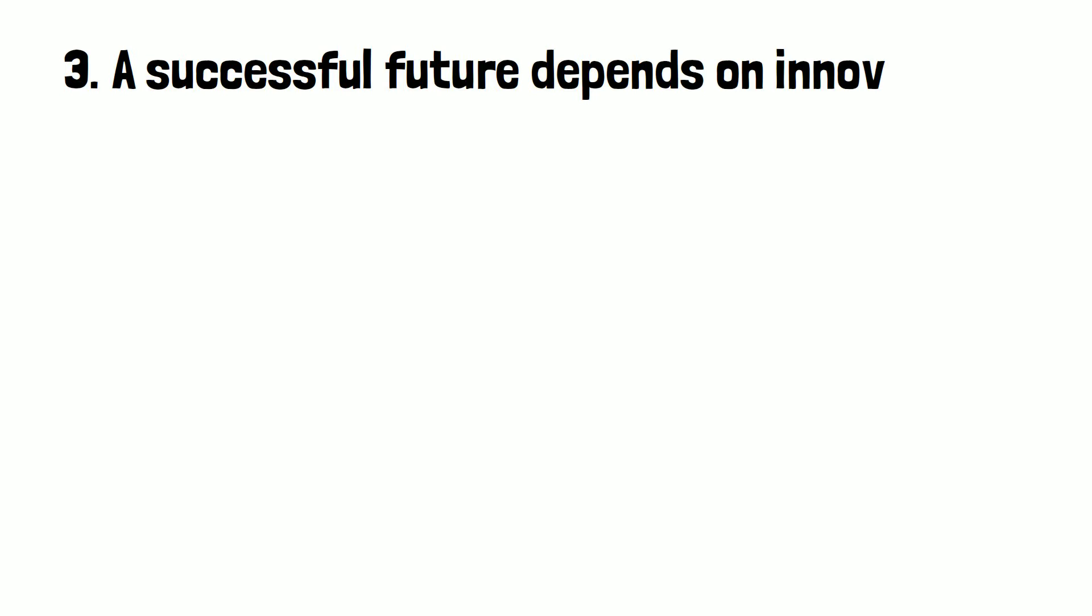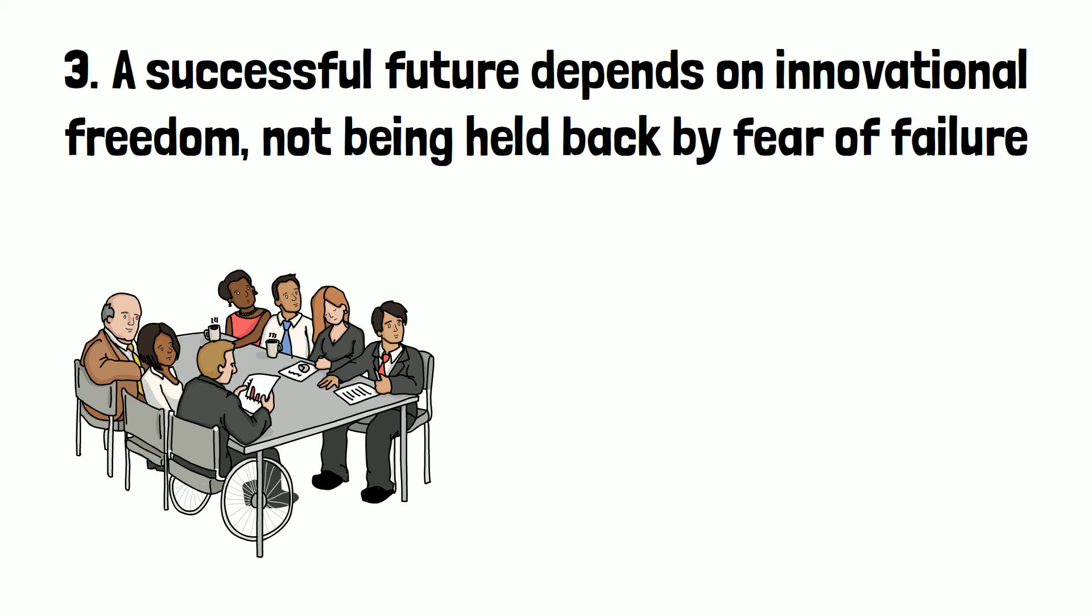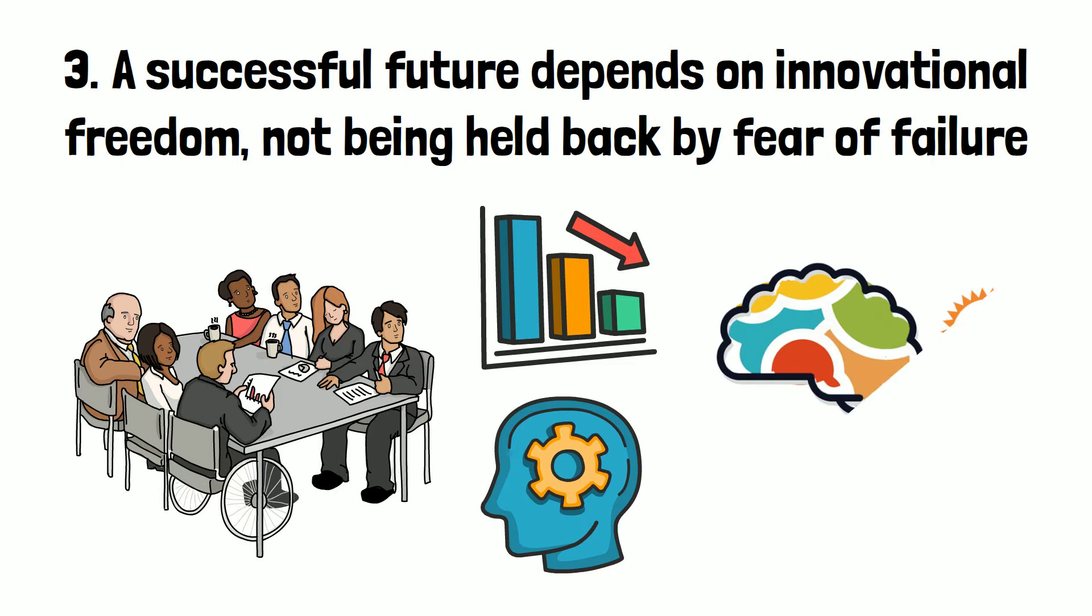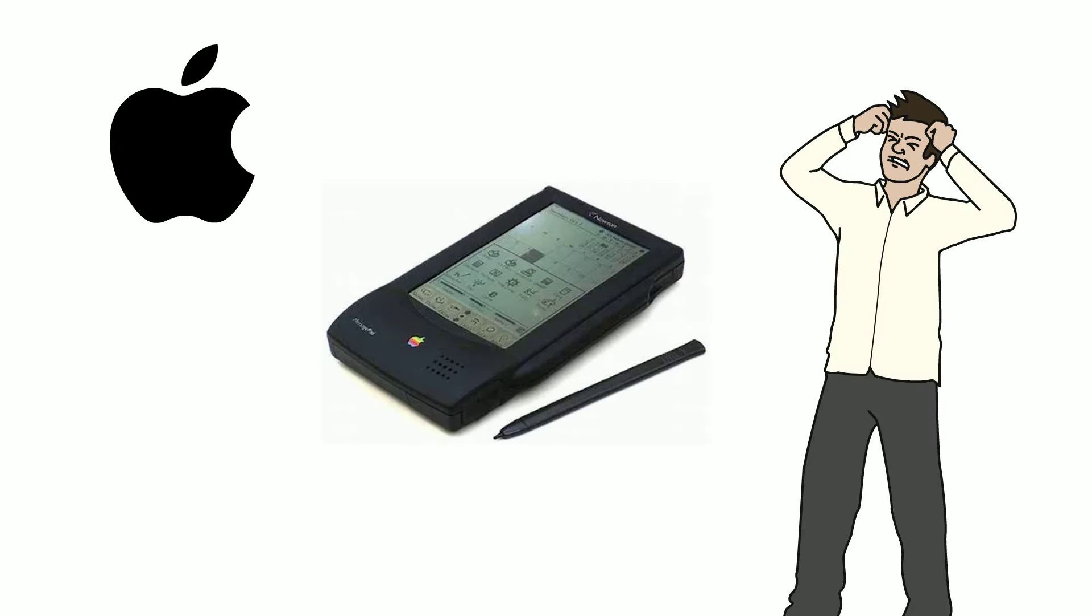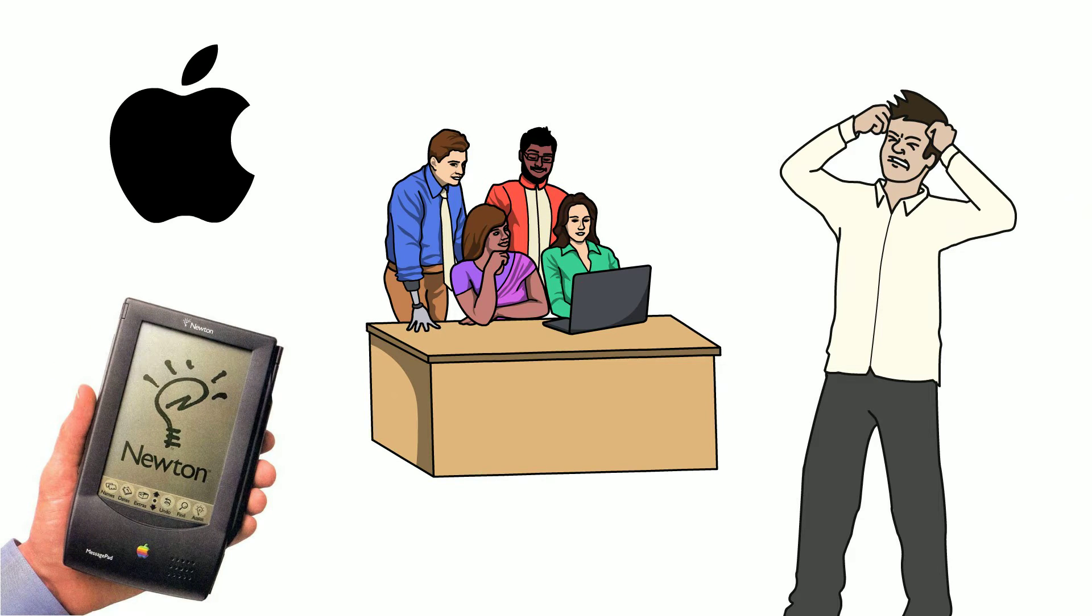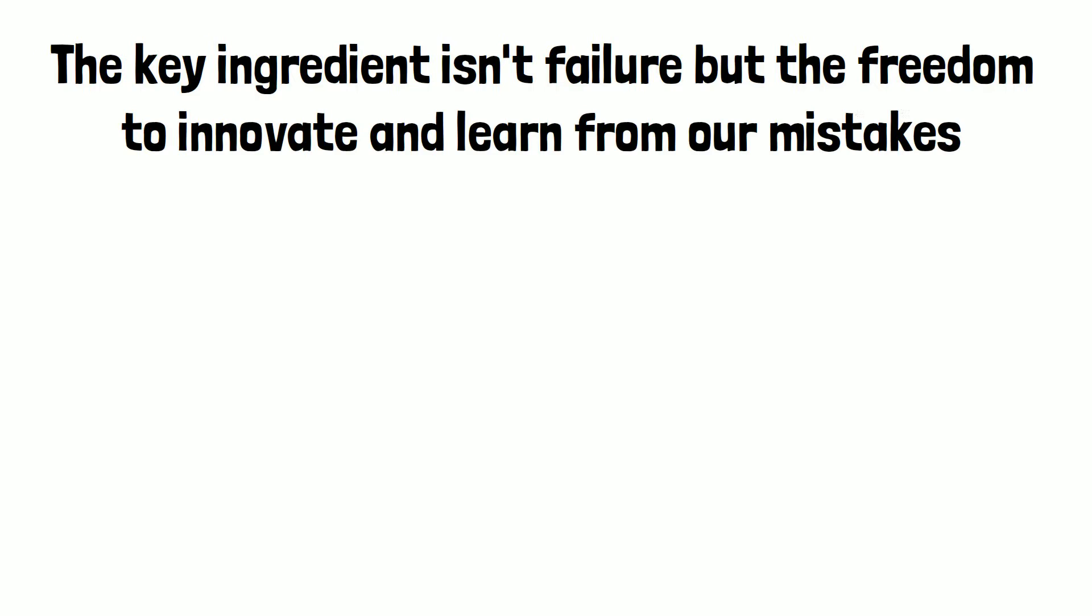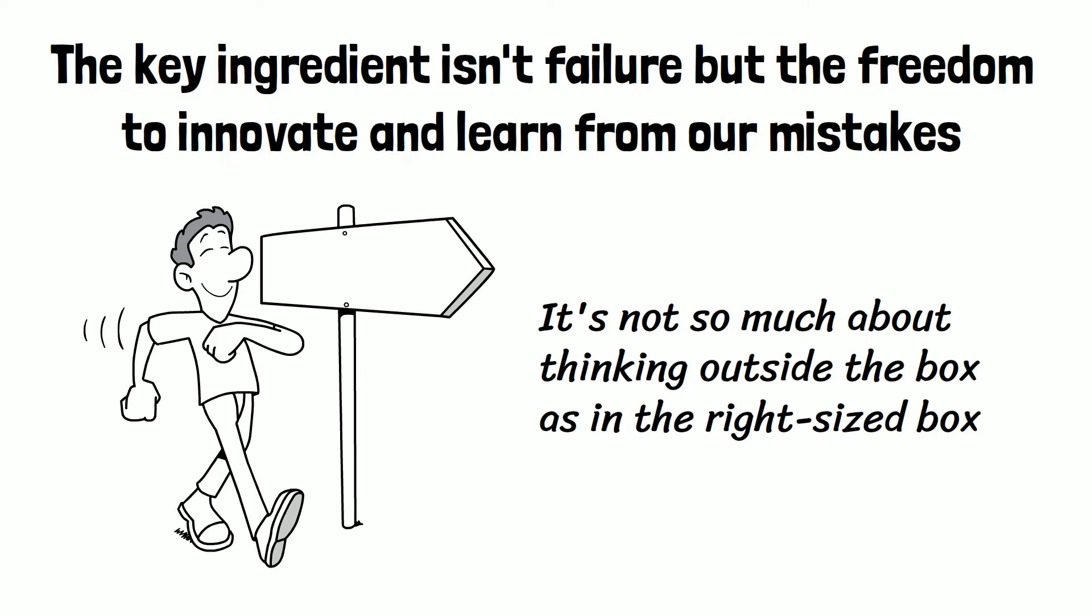Number 3. A successful future depends on innovational freedom, not being held back by fear of failure. Companies are increasingly aware of the potential benefits of failure and have developed techniques to make it more acceptable to encourage innovation. Examples are big companies like Apple, where Newton, the digital assistant, was a disaster, but much of the development work led to the creation of a handwriting recognition system. The key ingredient isn't failure, but the freedom to innovate and learn from our mistakes.